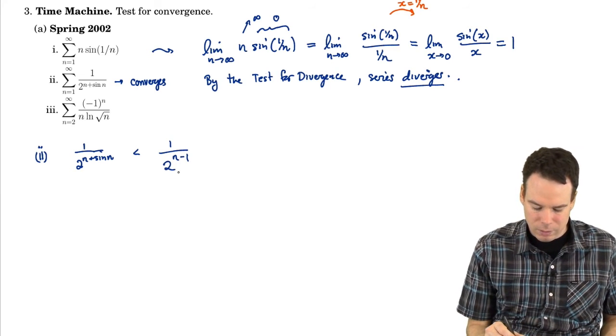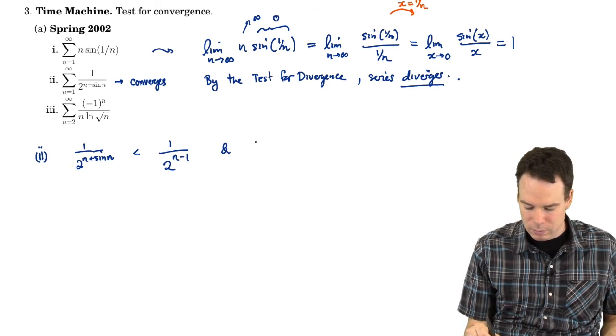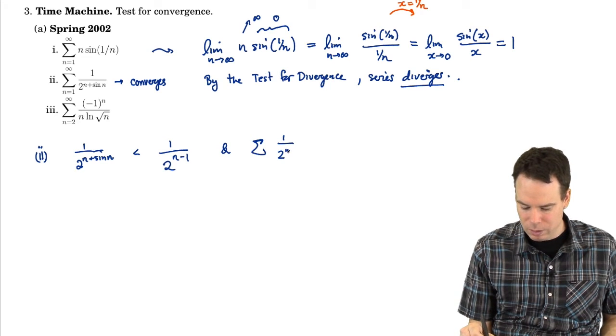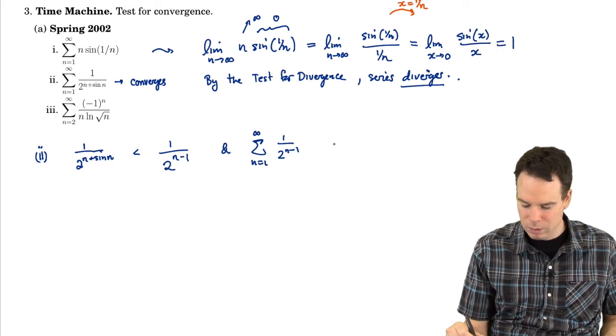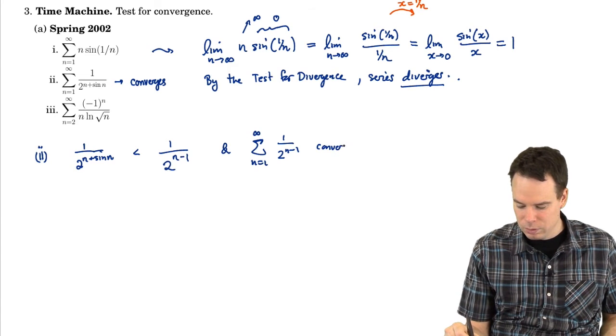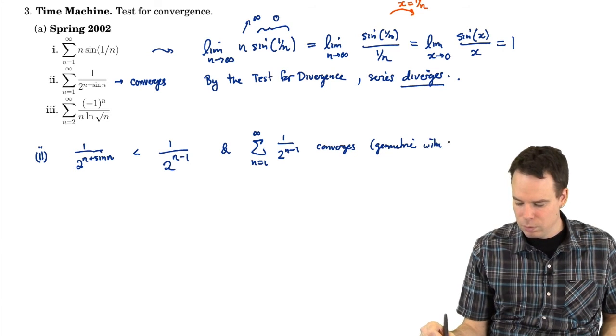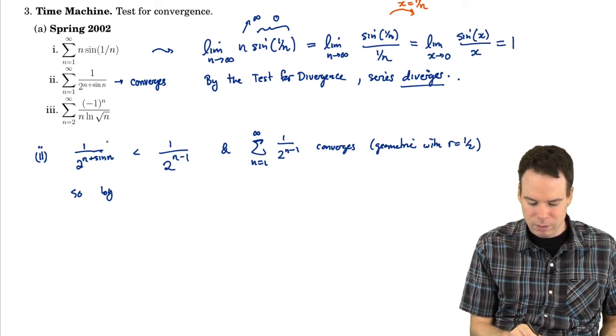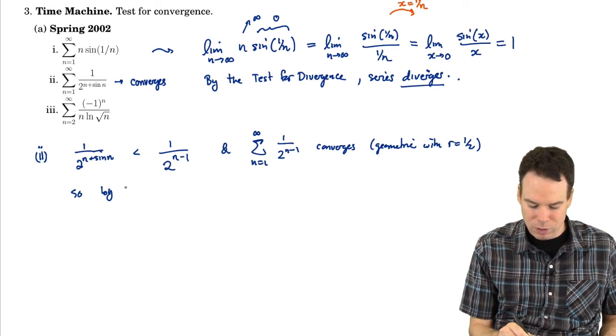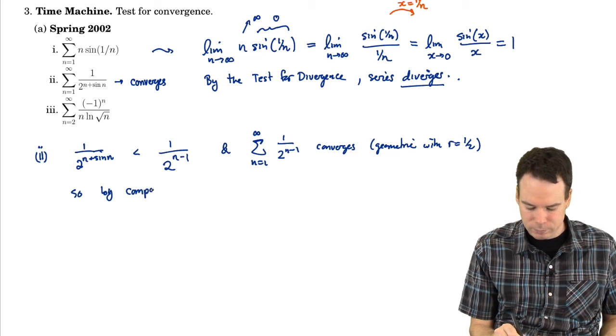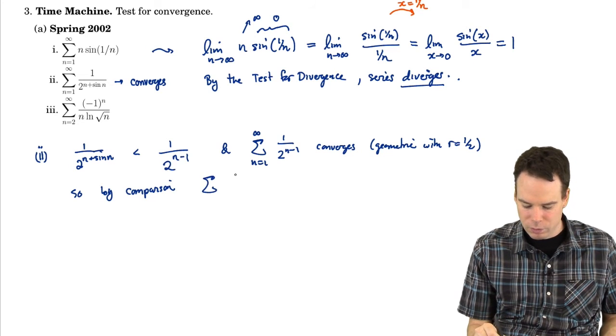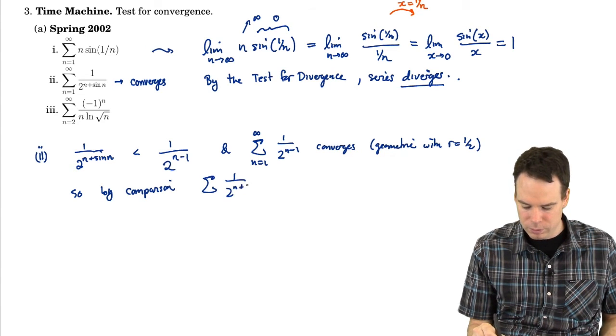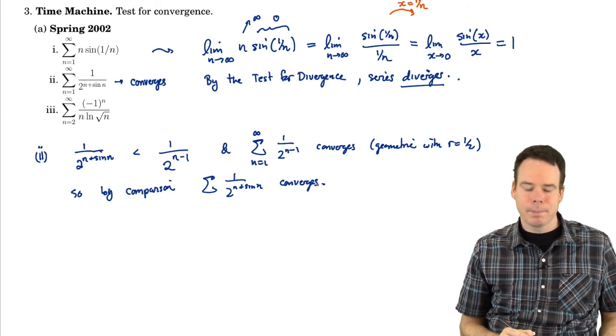So when I take the reciprocal, the reciprocal must be less than 1 over 2 to the n minus 1. And now I can say, well, this series, 1 over 2 to the n minus 1, where n goes from 1 to infinity, converges. It's geometric with r equals a half. So by comparison, the series that I'm really looking at, its terms are smaller than those of a geometric series. So by comparison, this converges. 2 to the n plus sine of n converges as well.